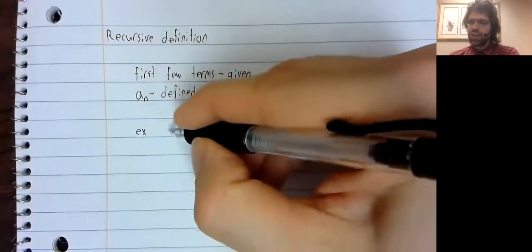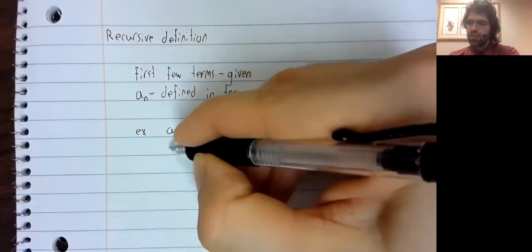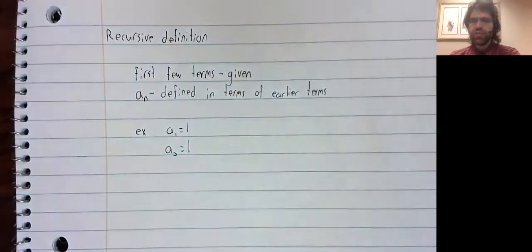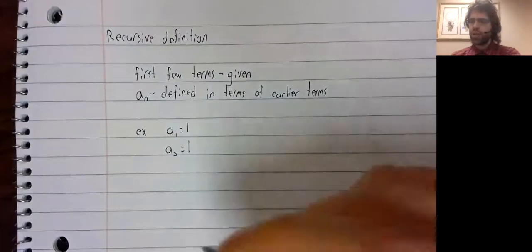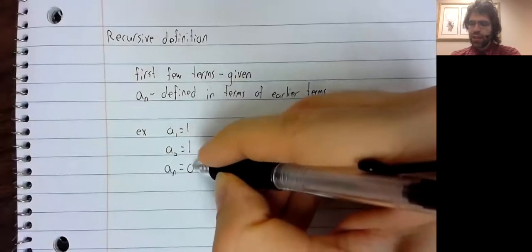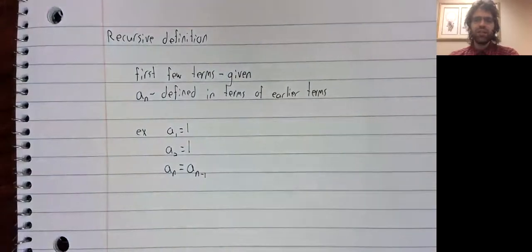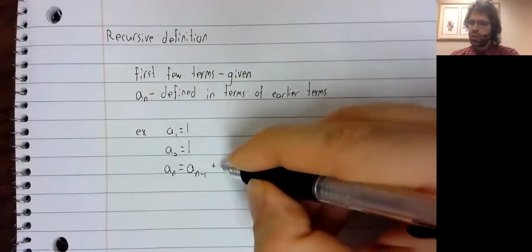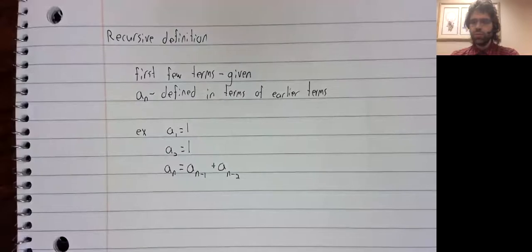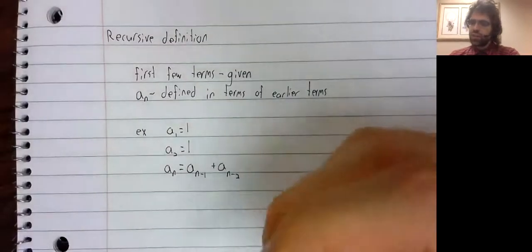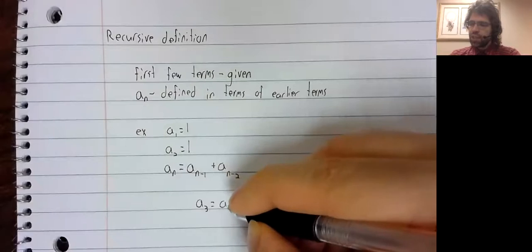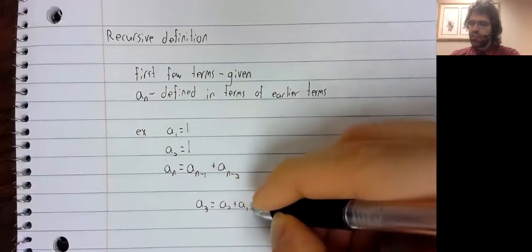So a classic example of this is the so-called Fibonacci sequence, where the first two terms are given to you, and then a sub n is defined to be a sub n minus one plus a sub n minus two. So using this definition, a sub three is a sub two plus a sub one.